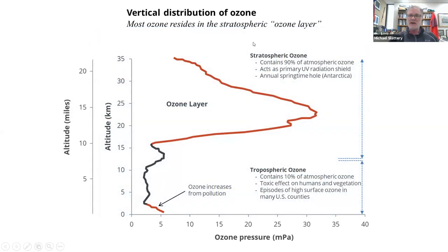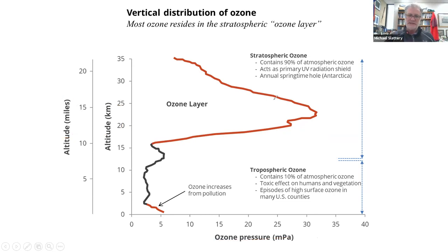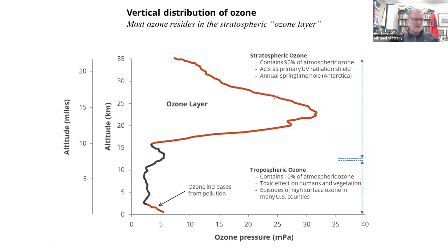Here's important diagram number one. This diagram shows the vertical concentration of ozone from the ground up. We've got altitude on the left axis in miles and kilometers. The bottom axis is ozone — not expressed as a concentration, but in terms of the pressure that the ozone exerts in the atmosphere.